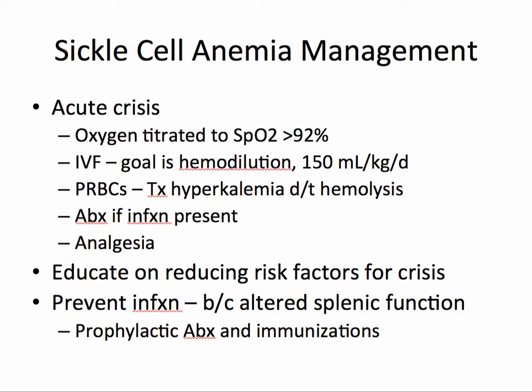In the management of an acute crisis, titrate oxygen to a saturation greater than 92 percent. The patient will require IV fluids for the goal of hemodilution — this is often 150 milliliters per kilogram per day. Patients may also require packed red blood cells, and the resulting hyperkalemia from hemolysis may need to be treated. Antibiotics are required if an infection is present, and these patients will also require strong pain medication. Educate patients on reducing risk factors for crises and preventing infection.